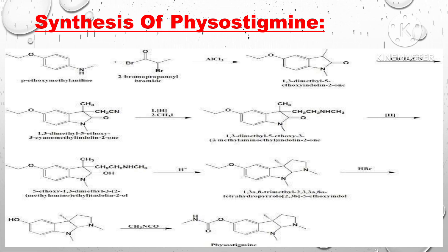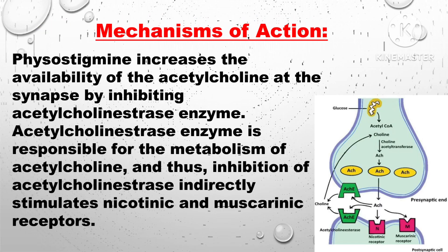Synthesis of Physostigmine: Para-methoxymethylene is reacted with 2-bromopropionyl bromide in the presence of AlCl3 to form 1,3-dimethyl-5-ethoxyindolin-2-one. Further reaction occurs to yield Physostigmine.